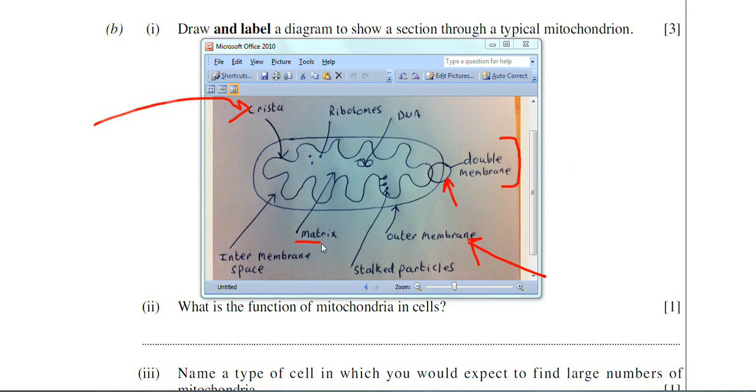The fluid part of the mitochondria is the matrix. And within the matrix, you do actually have DNA and ribosomes. Mitochondria is slightly unusual in that it has its own DNA, as indeed does the chloroplast. So mitochondria and chloroplasts have their own DNA. If they have their own DNA, then they must have ribosomes in order to carry out protein synthesis. The DNA, of course, is the code for proteins. And the ribosome is the location of protein synthesis.